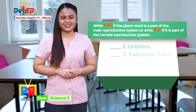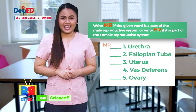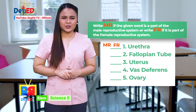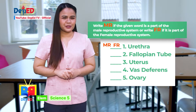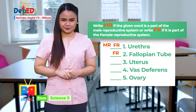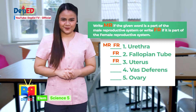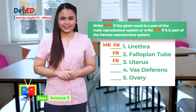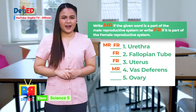Let's check your answers. Number one, urethra: MR and FR — it is located in both male and female reproductive systems. Number two, fallopian tube: FR. Number three, uterus: FR. Number four, vas deferens: MR. And number five, ovary: FR.